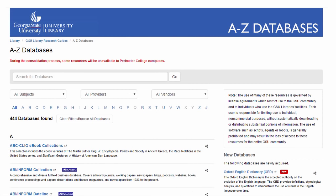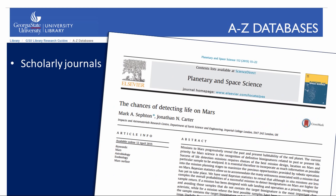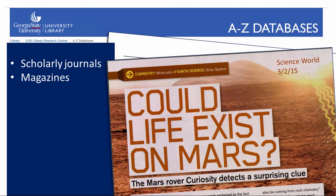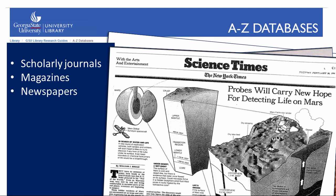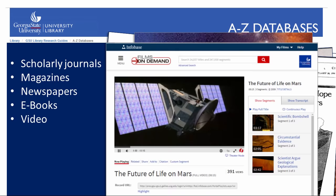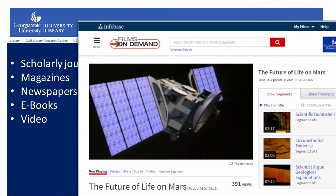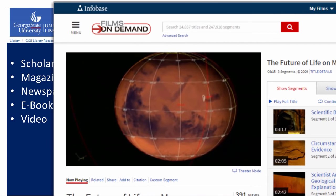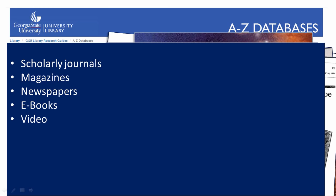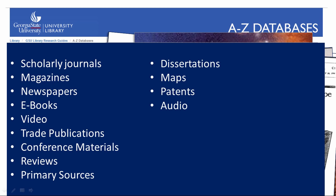can connect you with high-quality information sources, including articles from scholarly journals, magazines, and newspapers, as well as electronic books, streaming videos, and many other types of information sources. Many of the information sources found in research databases are not available on the open web, so you cannot get to them from search engines like Google.